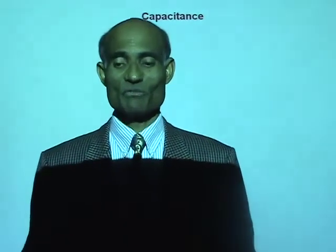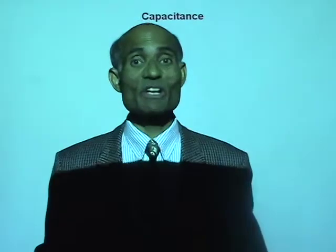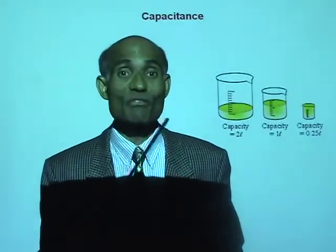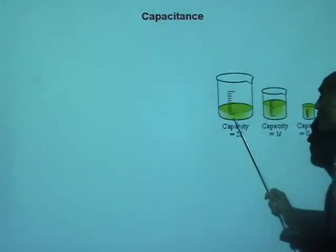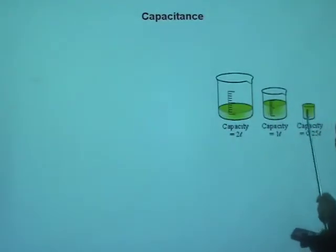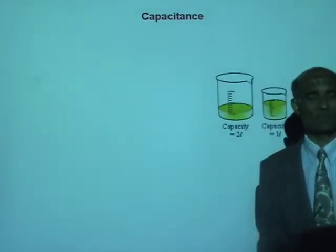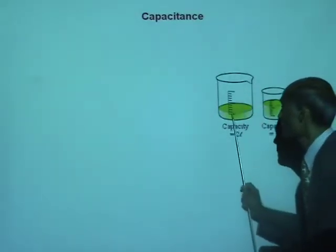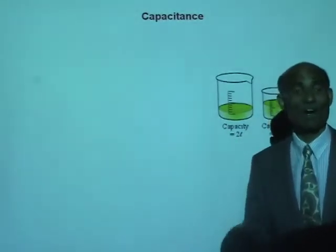Today we will start the fourth unit of our course with a discussion on Capacitance. What does Capacitance mean? Capacitance is analogous to the capacity of a container. Capacitance of a conductor is similar to the capacity of a container. Now, how can you define the capacity of a container? How much fluid or liquid can be poured into it to increase the height by 1 meter — that can be a measure of the capacity of a container.